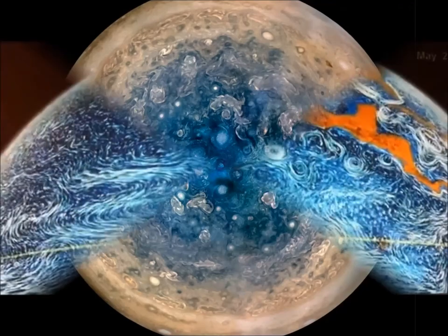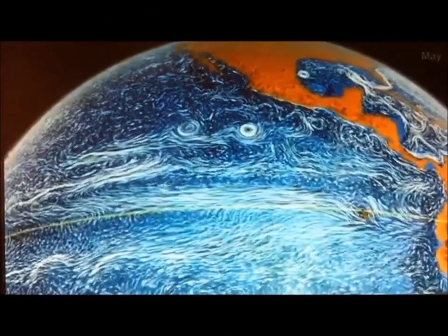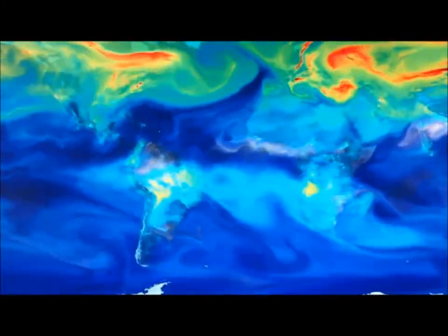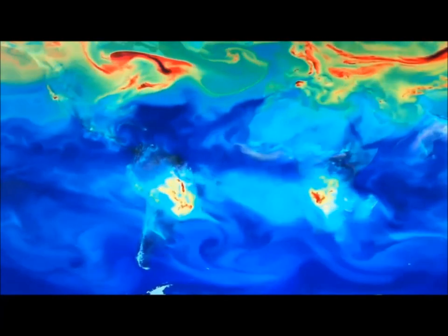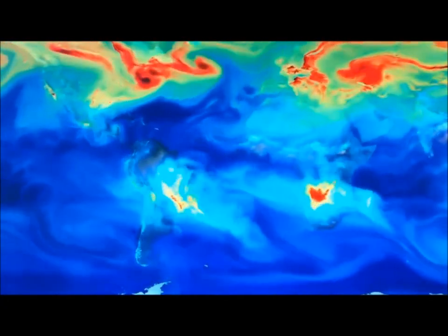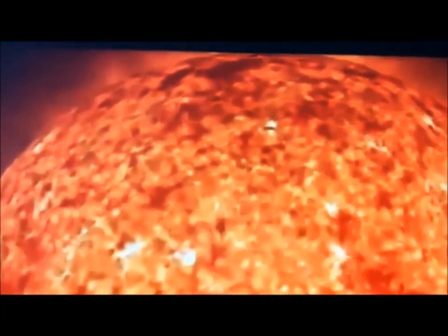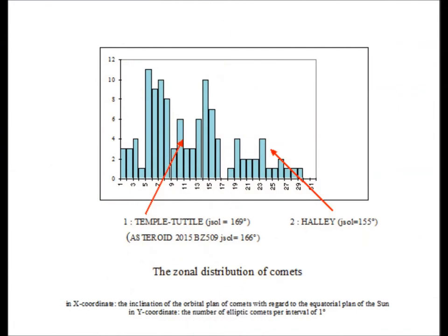Ocean currents of the Earth also have a distinctly zonal aspect. The phenomenon is also indisputable for terrestrial winds even if it is less clear. The rotation of the Sun around itself is essentially zonal. Moreover, the low inclination of the trajectories of comets reported to the equatorial plane of the sun have a distinctly zonal distribution.